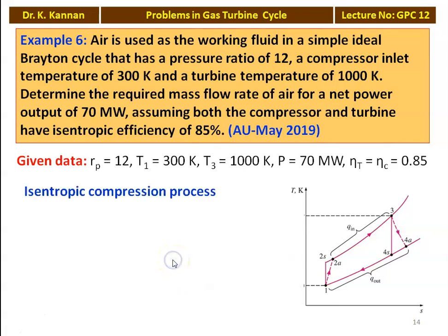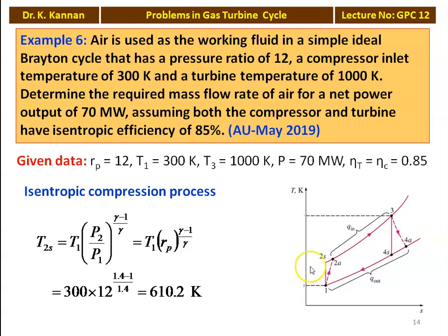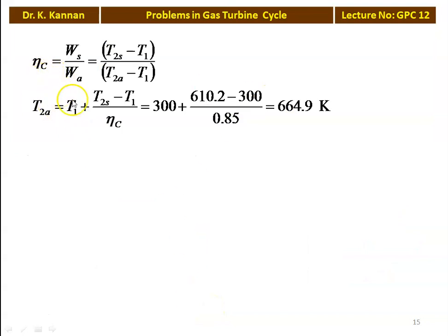For isentropic compression: T2S = T1 × Rp^((γ-1)/γ) = 300 × 12^(0.4/1.4) = 610.2 K. Compressor efficiency = isentropic work / actual work = (T2S - T1)/(T2A - T1). So actual outlet temperature: T2A = T1 + (T2S - T1)/η_c = 300 + (610.2 - 300)/0.85 = 664.9 K.